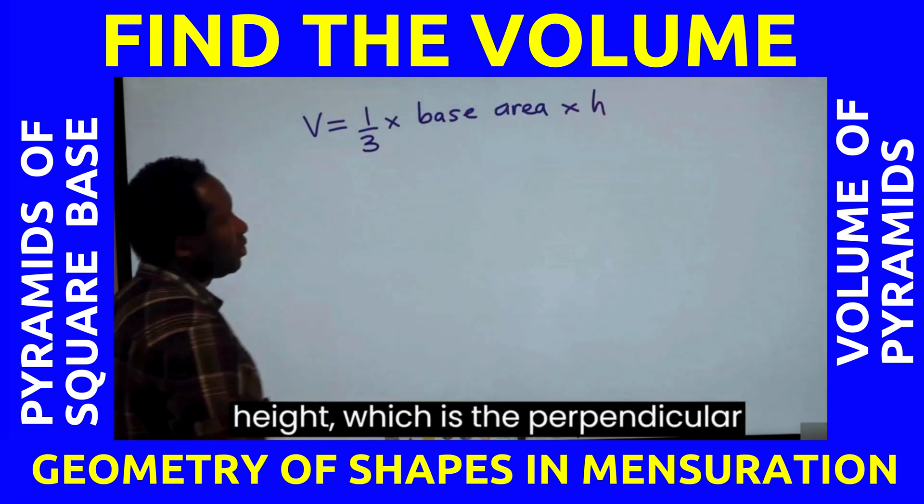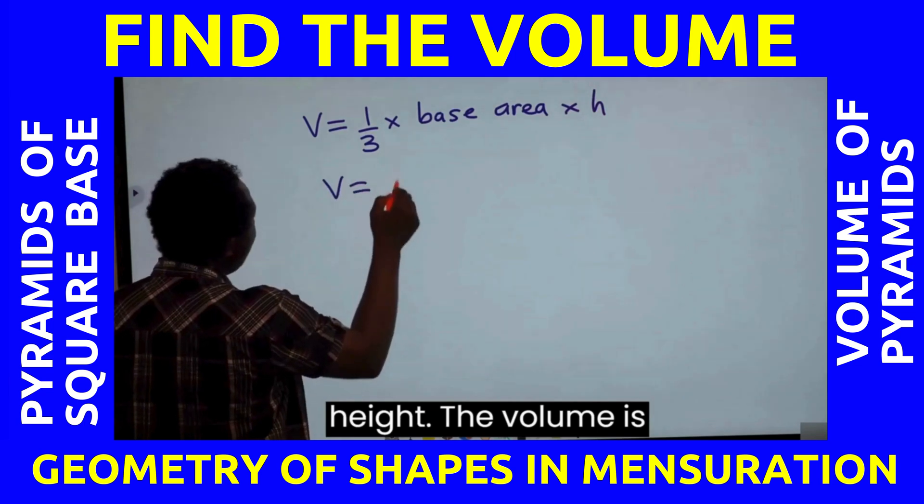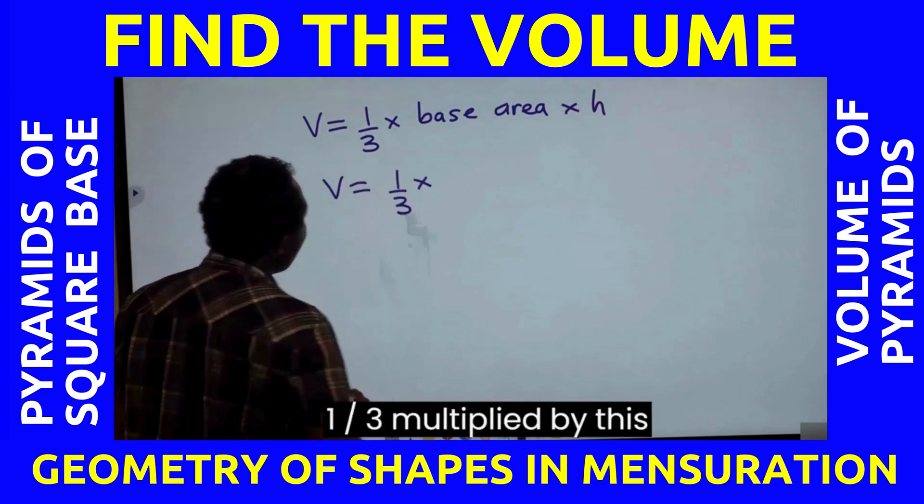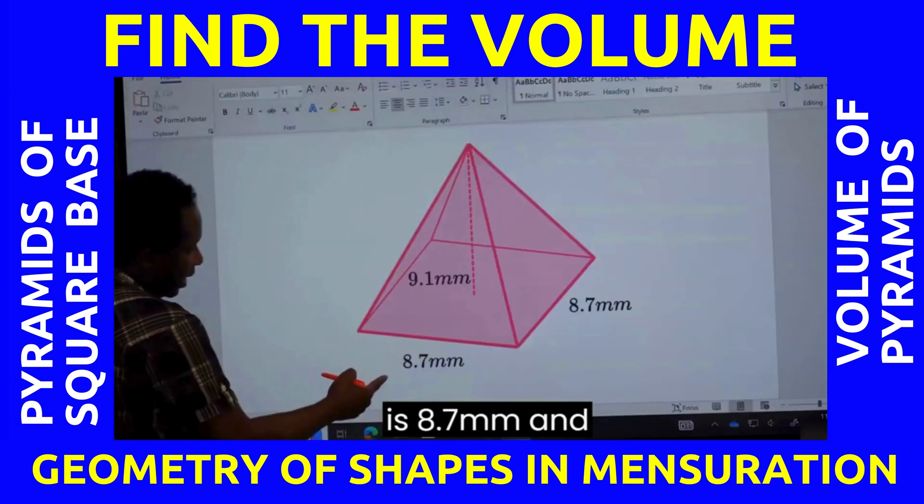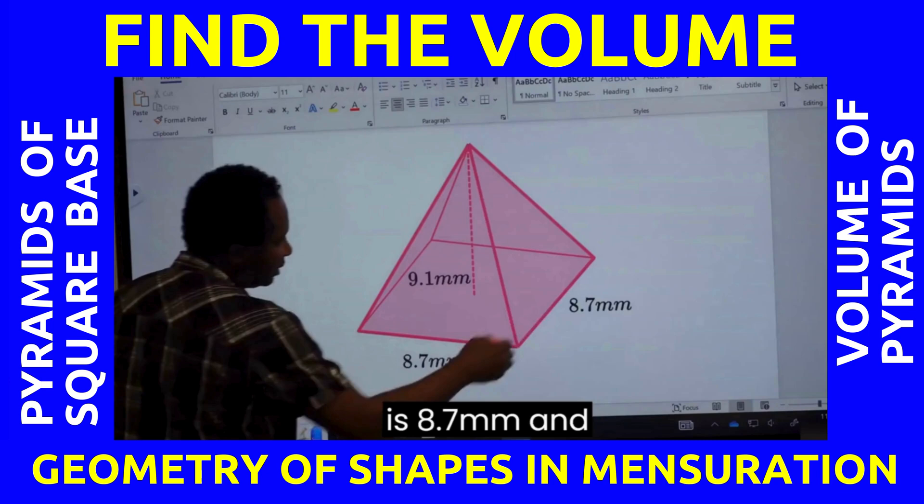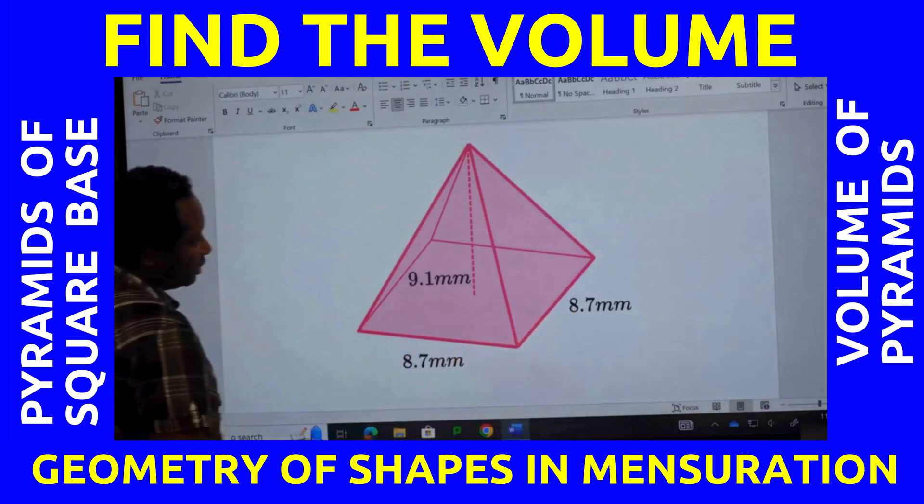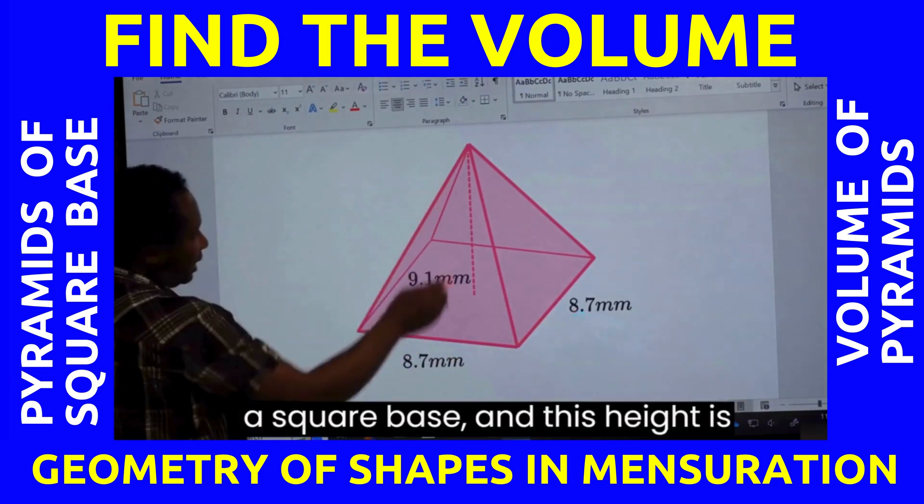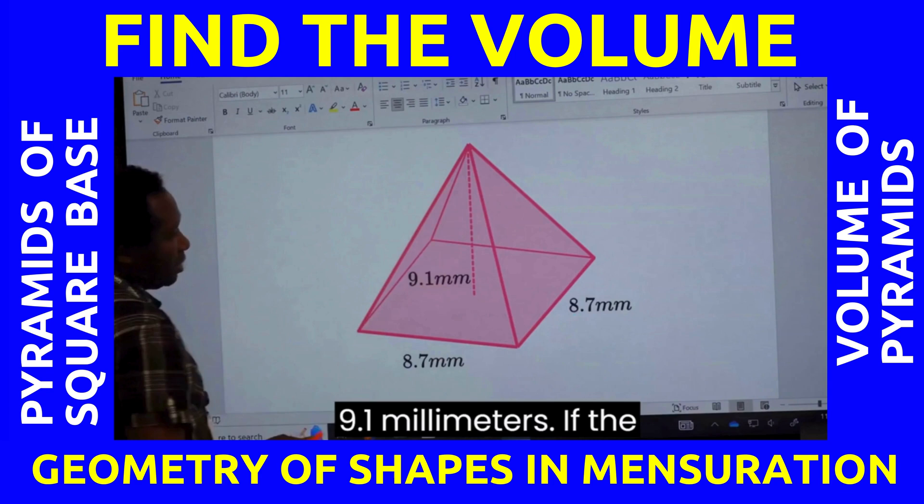Which is the perpendicular height. The volume is 1 over 3 multiplied by, this is 8.7 millimeters, and this is 8.7 millimeters. It's a square base. And this height is 9.1 millimeters.